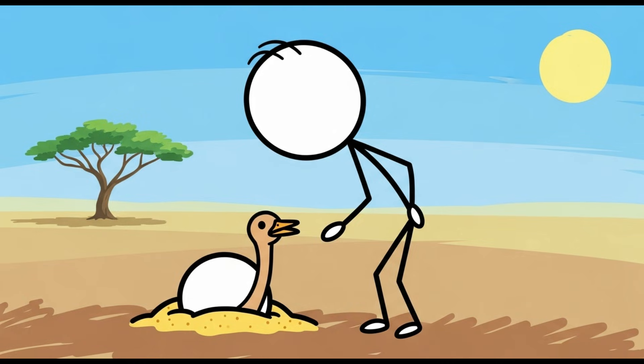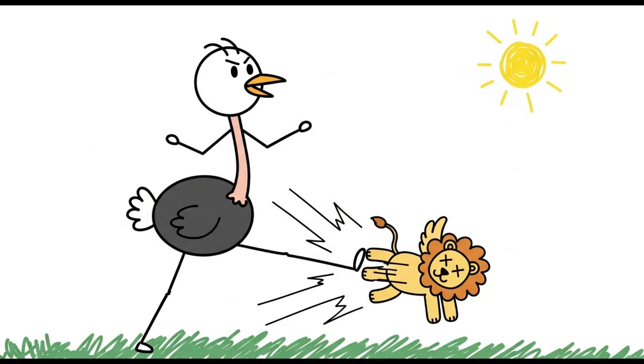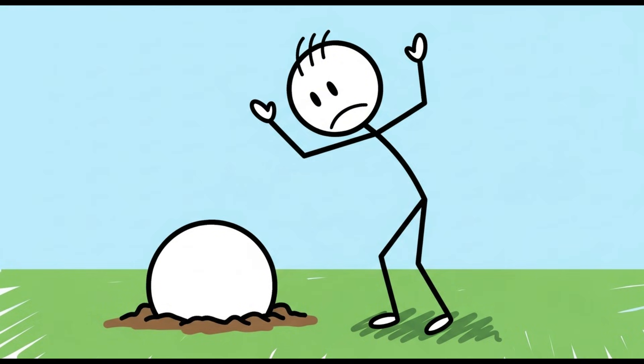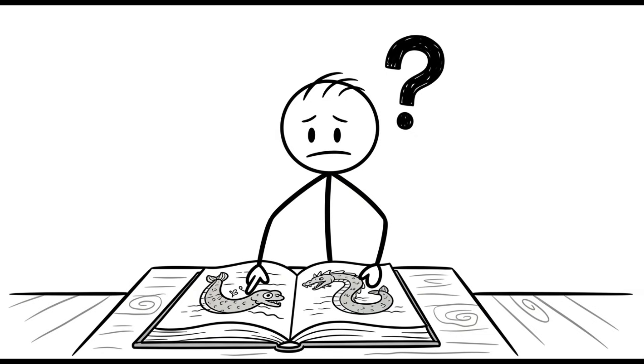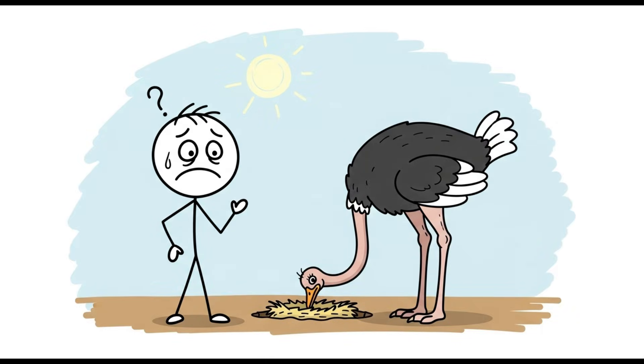Ostriches have survived for millions of years, and they didn't do it by being the dumbest animal on the savannah. They are 200-pound, 9-foot-tall birds that can run at 45 miles per hour and deliver a kick powerful enough to unalive a lion. So where did this myth come from?